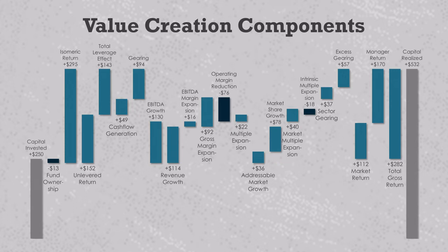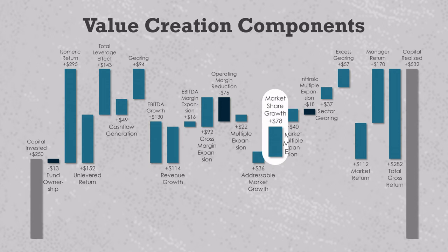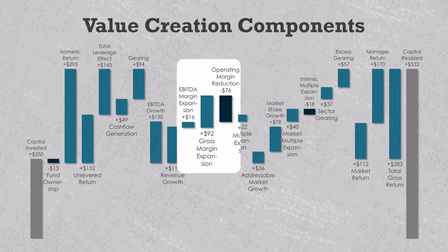Here I'll highlight how the value drivers can help quantify those GP fundraising narratives. Let's say the GP only invests in companies whose end markets are growing by 3 or 5%. In that case, you should see a consistent pattern of positive value creation in the addressable market growth. What if the GP claims that sales execution is core to every value creation strategy because they focus on professionalizing company sales forces and building channel partnerships? Then you should see significant value creation coming from market share growth in most deals — a positive number regardless of whether the company's end market is expanding or contracting. The company actually generates $92 million of value from gross margin expansion because there's a decrease in COGS as a percentage of revenue.